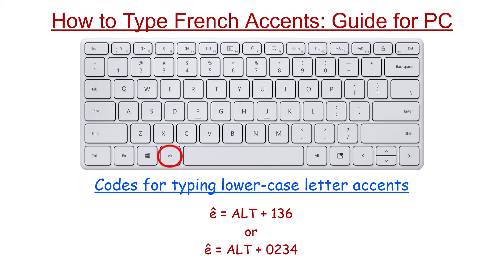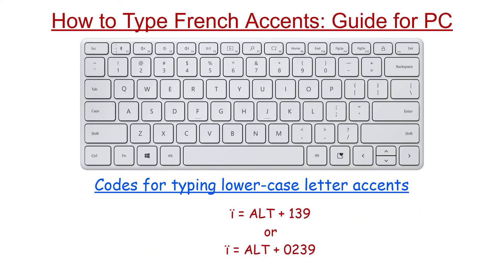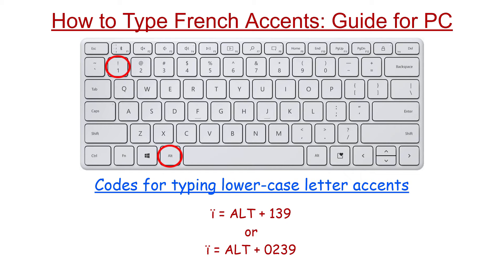Hold down ALT key and press 1, 3, 6 — or else hold down ALT key and press 0, 2, 3, 4. Then release ALT key for the letter to appear. Hold down ALT key and press 1, 3, 9 — or else hold down ALT key and press 0, 2, 3, 9. Then release ALT key for the letter to appear.